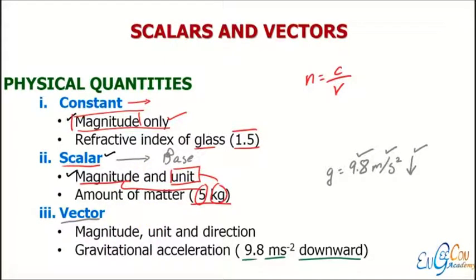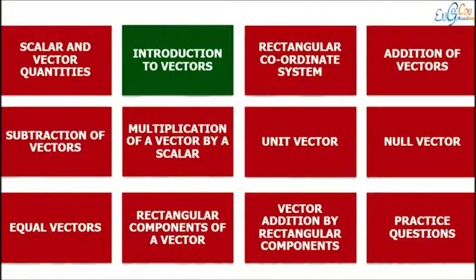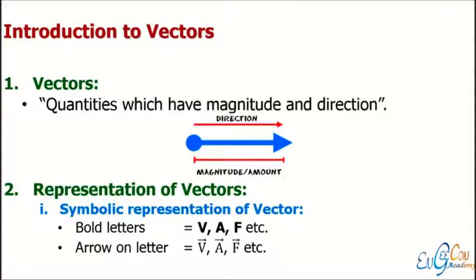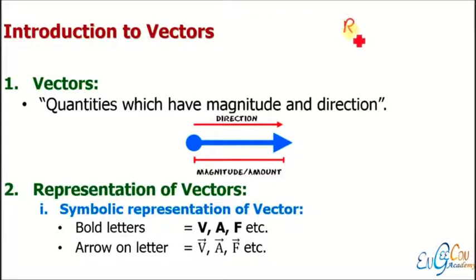Now we discuss the introduction to vectors. A vector is a quantity which has magnitude, direction, and unit. Vectors are basically drawn in the shape of an arrow. There are two types of vector representation: symbolic representation and graphical representation.